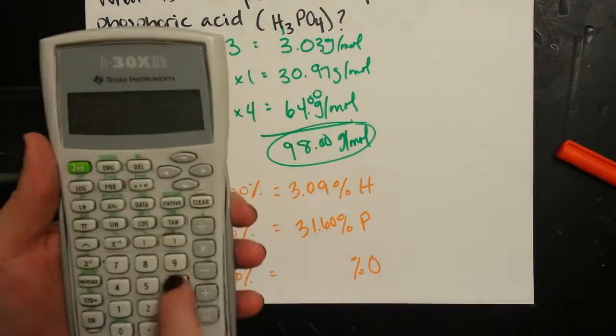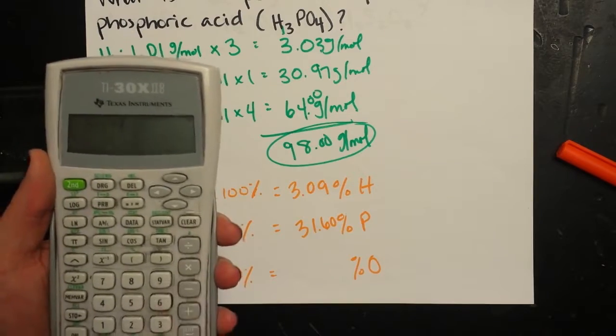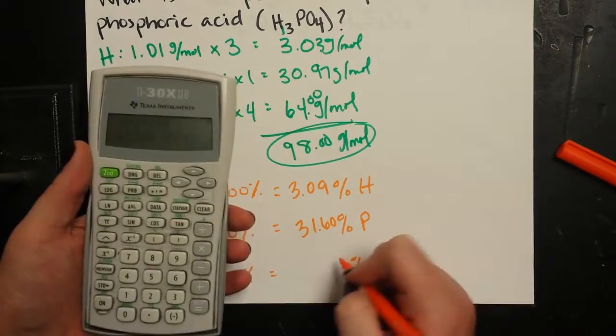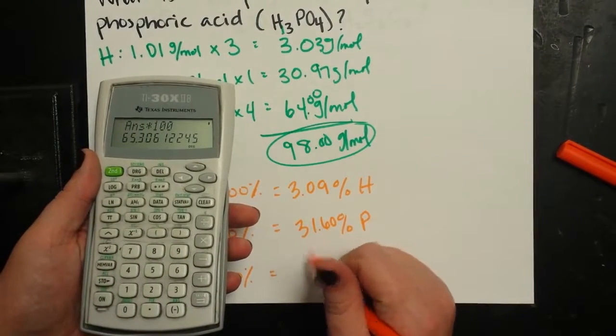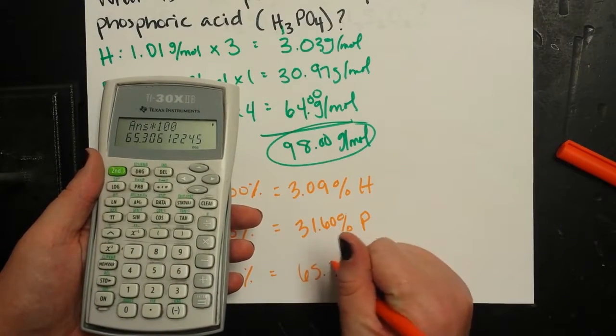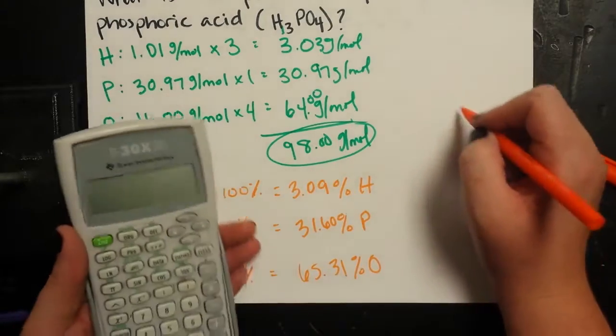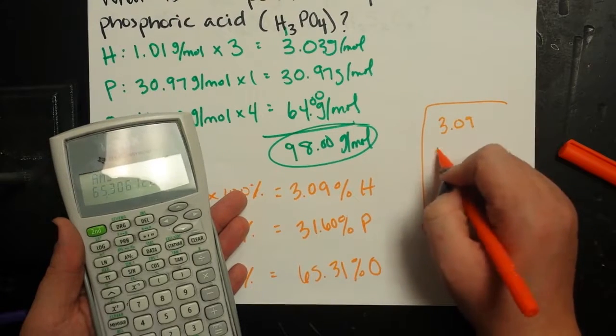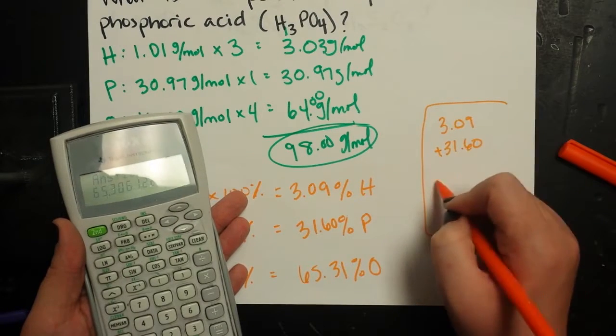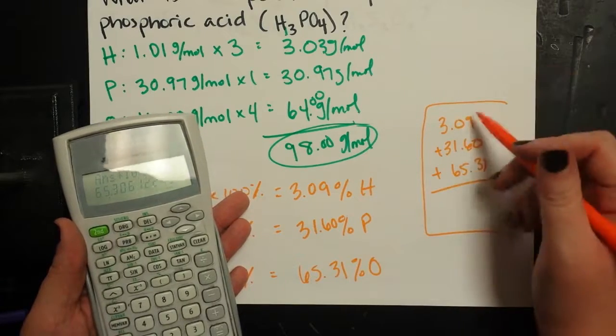And then I'm going to take the 64 and divide it by 98 and then multiply it by 100. So phosphoric acid is 65.31% oxygen. I can check my work and say 3.09 plus 31.60 plus 65.31. That should equal exactly 100.